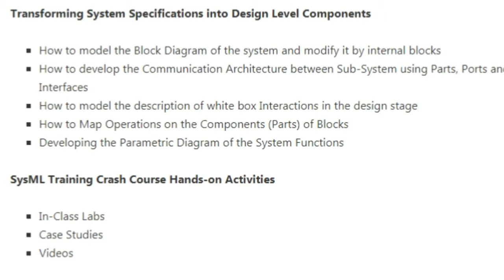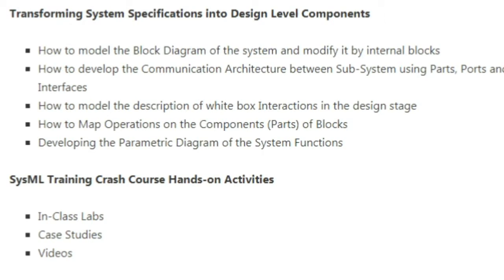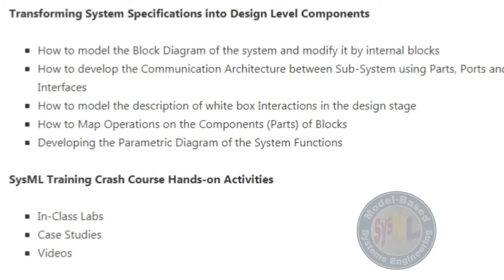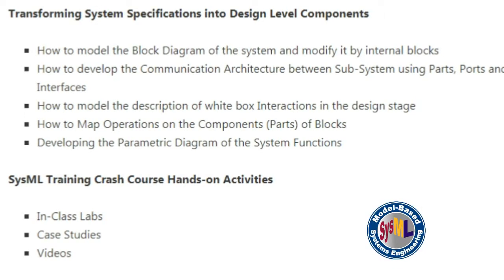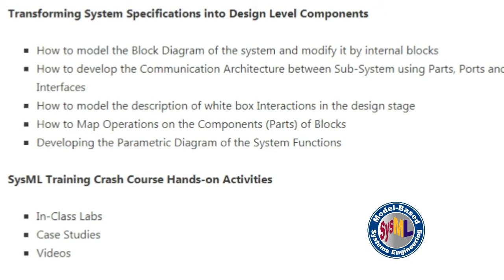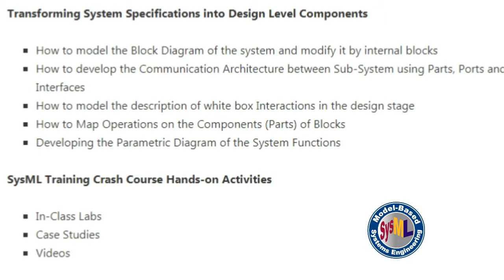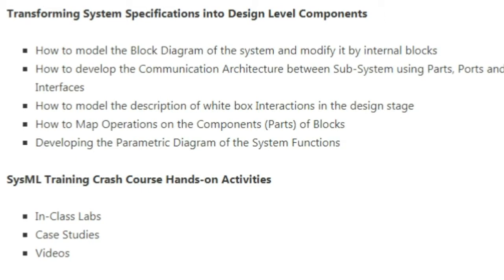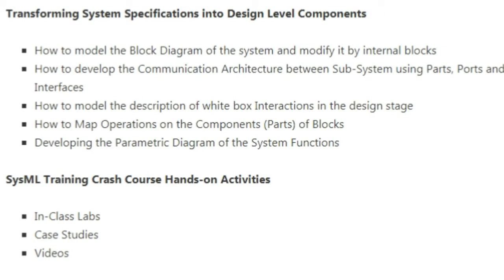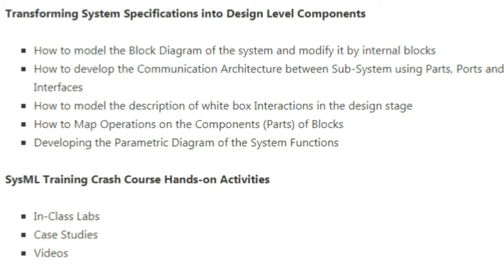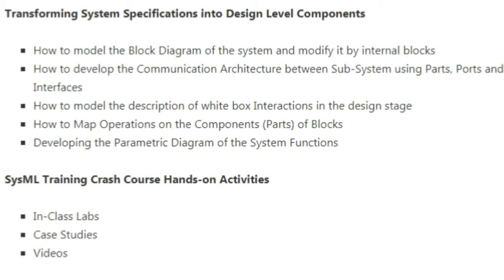Additional topics cover transforming system specifications into design-level components, how to model the block diagram of the system and modify it by internal blocks, how to develop the communication architecture between subsystems using parts, ports, and interfaces, how to model white-box interactions in the design stage, and how to map operations on component parts and blocks, developing the parametric diagram of system functions.